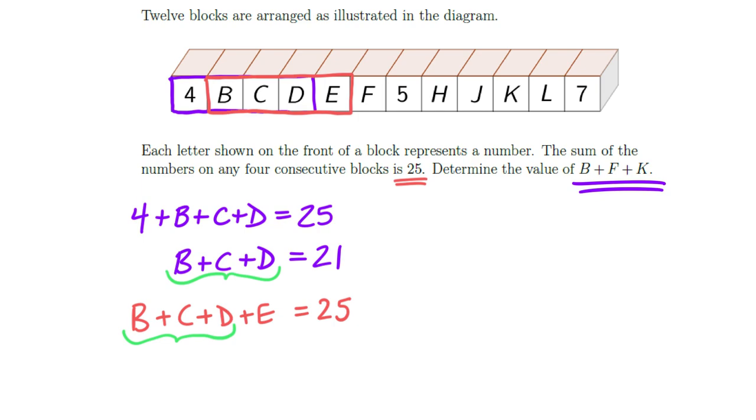So if I then wrote that in, I then know that that 21 plus some number has to give me 25. And pretty quickly then, I can see that that's 4. So if I just went up above and I wrote in, I just found out that the value of E was 4.